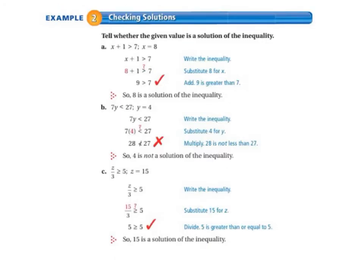Let's move on to Example 2, Checking Solutions. Tell whether the given value is a solution of the inequality. X plus 1 is greater than 7, and so we would try X equals 8. So we write the inequality and we substitute 8 for X. 8 plus 1, we're questioning whether that's greater than 7. So we add it up. 9 is greater than 7. So it checks out. So 8 is a solution of the inequality.